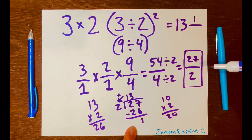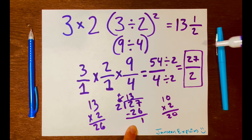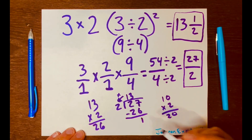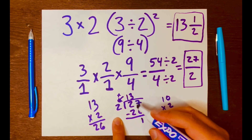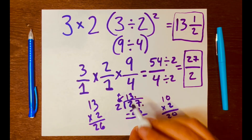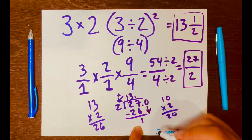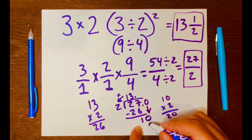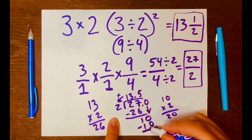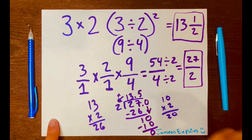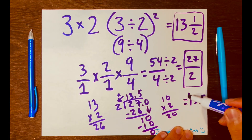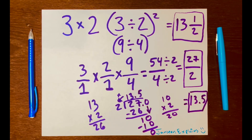So the mixed number answer is 13 and one-half, with 2 as the denominator. But we also want a decimal answer, so let's continue with long division. How many times can 2 fit into 1? It cannot, so we add a decimal point after the 27 and the 13, and borrow a 0. The 1 becomes 10. How many times can 2 fit into 10? Five times — 5 times 2 is 10, and 10 minus 10 is 0. So the decimal answer is 13.5.